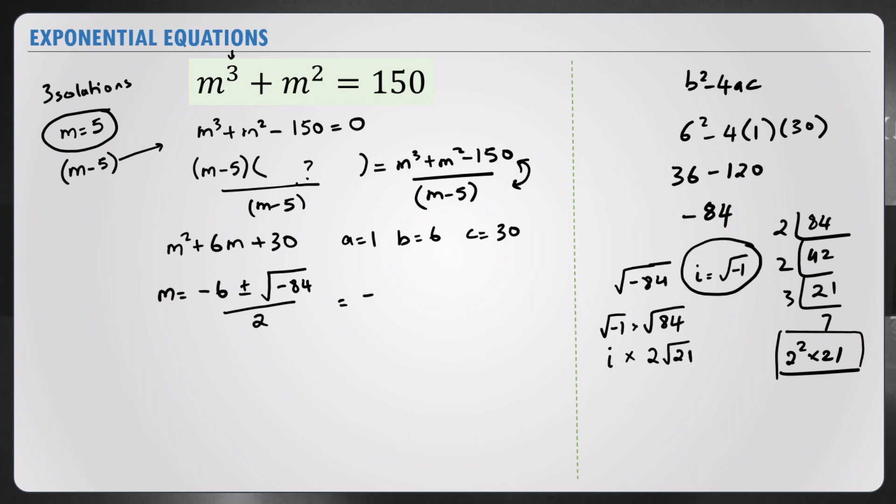So this will be equal to negative 6 plus or minus 2 root 21 i over 2. This cancels and we get 3 here. So your m will be equal to negative 3 plus or minus root of 21 i. And those are the two remaining solutions. The three solutions are m equals 5 and these are the other two solutions.